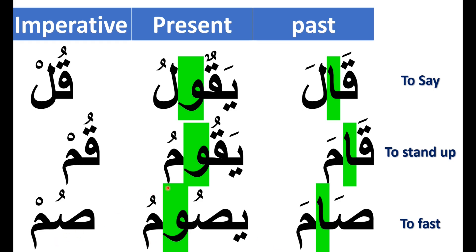As you notice, the Alif in the verbs is replaced by Waaw in the present tense, and the verbs completely lose their Alif in the imperative tense.